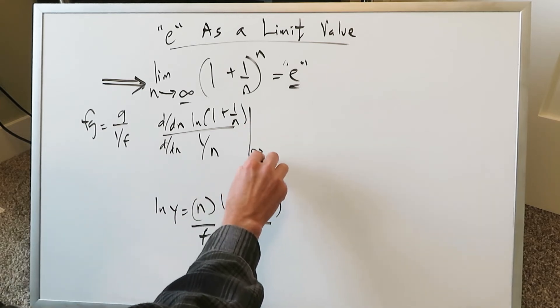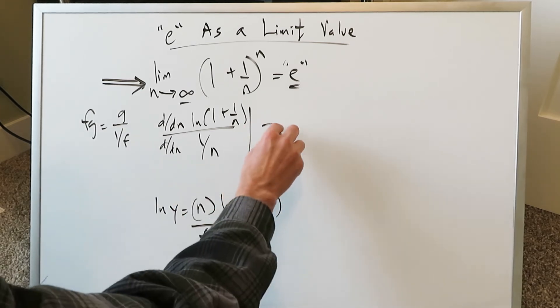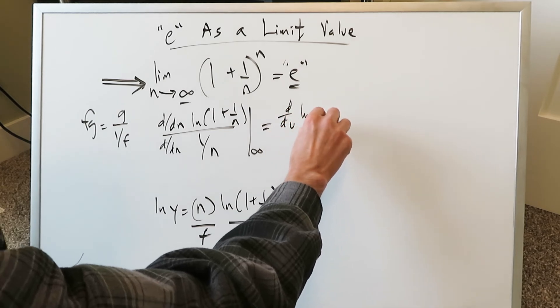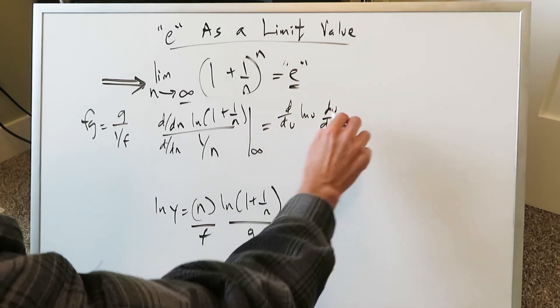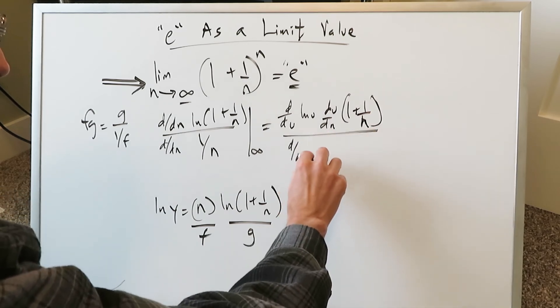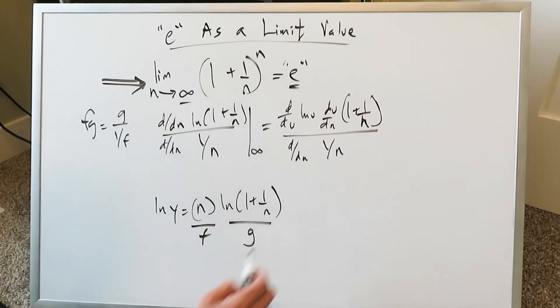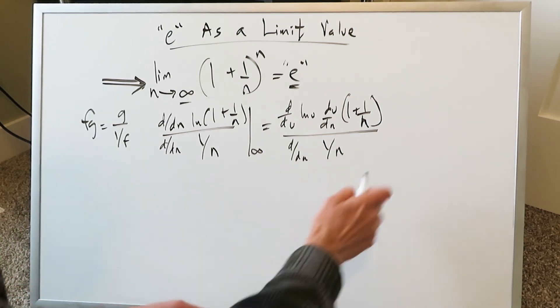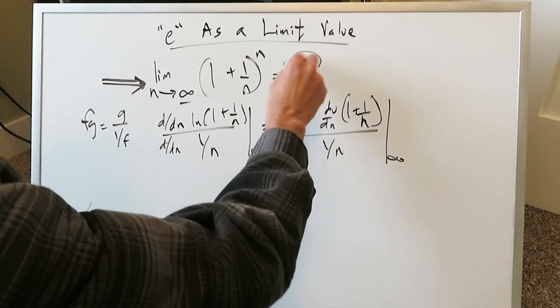And we'll at the end be able to plug in infinity. When we do this we employ the chain rule. d over du ln u and then du over dn. You're doing the derivative of 1 plus 1 over n. In the denominator you're just doing the derivative of this reciprocal of n which is not hard. All of this right here is not hard. But this is another way of looking at it in terms of how we develop this e value.